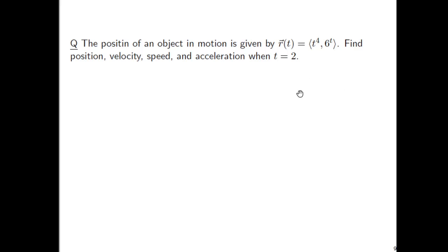Okay, let's do a quick example. Let's look at the position of an object in motion given by the vector function R of t equals first component t to the fourth, second component 6 to the t. We'll find the position, velocity, speed, and acceleration when t equals 2.